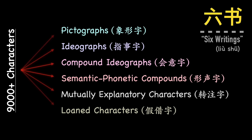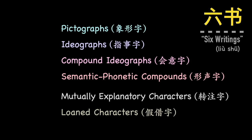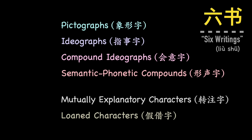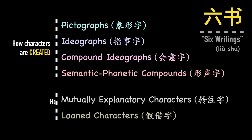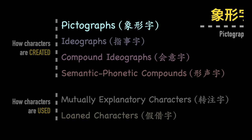But only one of these categories is the key to 80% of all Chinese characters. Four of the categories describe ways characters are created, and two describe ways characters are used. The first category is pictographs — xiang xing zi — which we already discussed.